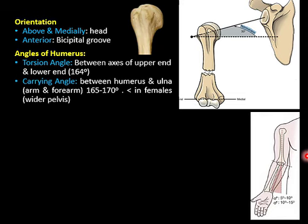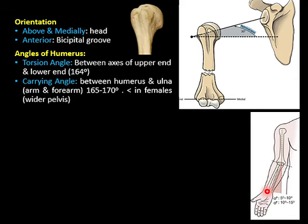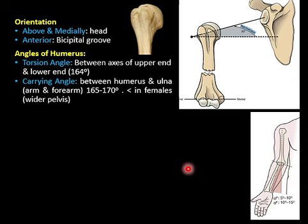The second angle is called the carrying angle, which is between the humerus and the ulna, or between the arm and forearm. It helps a person carry a bag without it hitting the lower limb when the forearm is supinated. This angle is about 165 to 170 degrees on the obtuse side, and it is smaller in females — meaning the forearm has more lateral inclination in females, because females have a wider pelvis to accommodate childbirth.